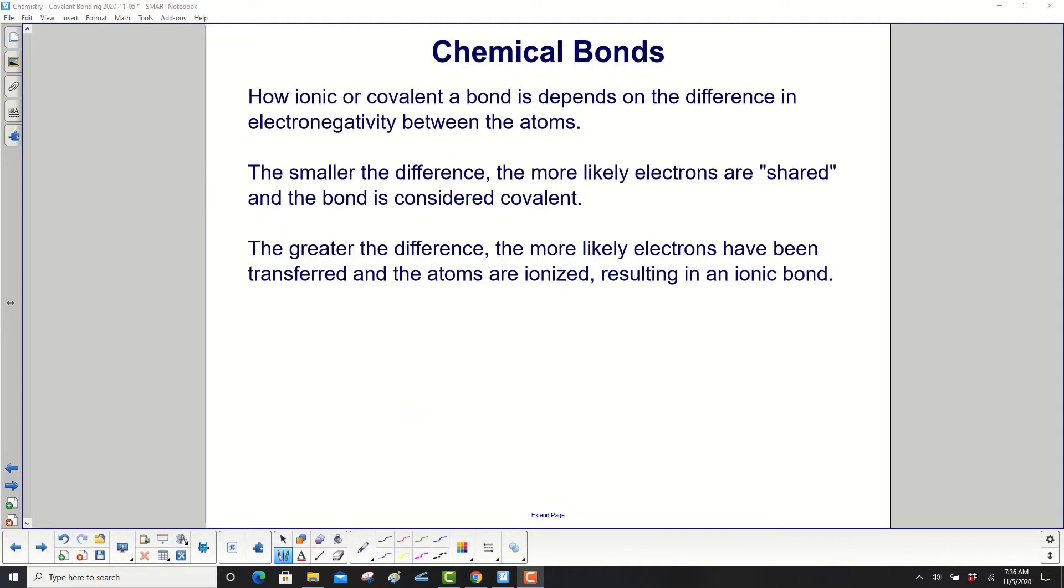How ionic or covalent a bond depends on the difference in electronegativity between the atoms. The smaller the difference, the more likely electrons will be shared and the bond will be considered covalent.